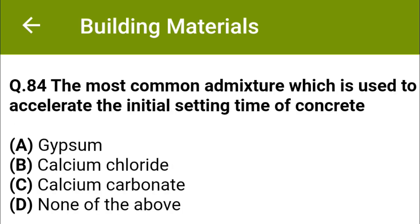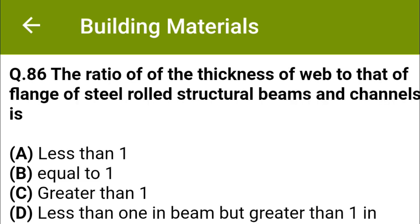The most common admixture which is used to accelerate the initial setting time of concrete: option A, gypsum; option B, calcium chloride; option C, calcium carbonate; option D, none of the above. The correct answer is option B, calcium chloride.